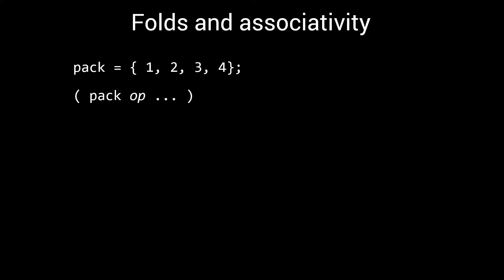If your parameter pack contains the numbers 1 through 4, first the operator would be applied to 3 and 4. Then the result of that would be combined with 2, and the result of that with 1.